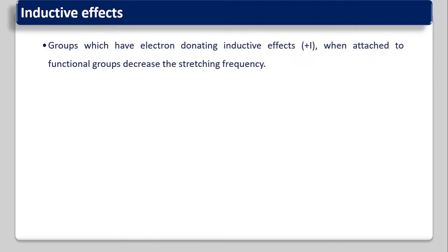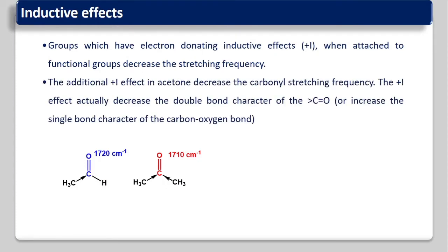Groups which have an electron-donating inductive effect (+I effect), when attached to the functional group, decrease the stretching frequency. For example, acetaldehyde has a frequency of 1720 cm⁻¹ while acetone has 1710 cm⁻¹. The additional +I effect in acetone decreases the carbonyl stretching frequency because the +I effect decreases the double bond character of the carbonyl bond.